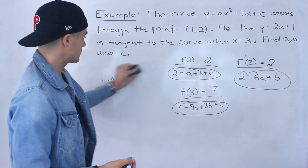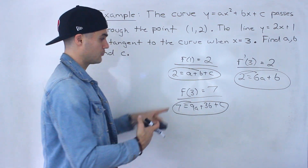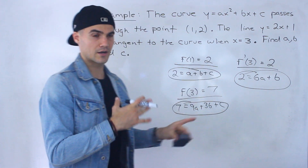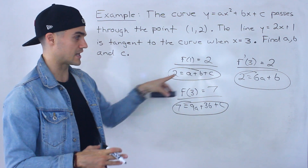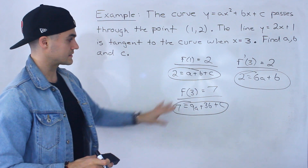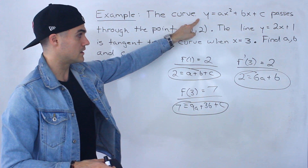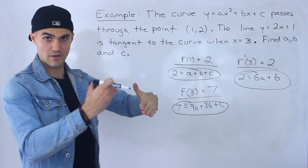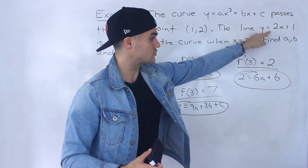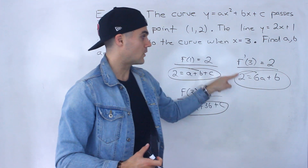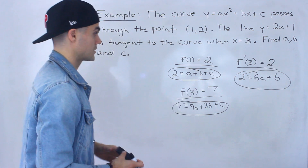Now we have three unknowns and three equations, so we can solve for a, b, and c. Coming up with equations two and three is a little tricky — you have to know what's going on. Hopefully the diagram helped. The point (3, 7) is on the curve because the tangent and curve share that point at x equals 3, and since the slope of the tangent is 2, f prime of 3 equals 2.